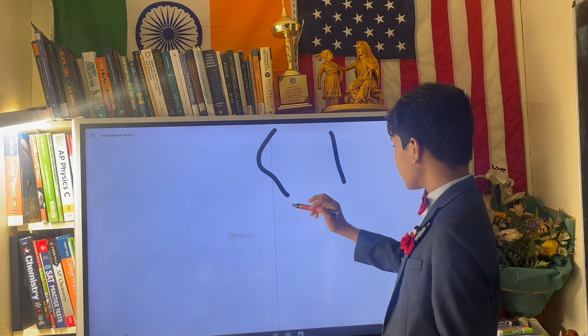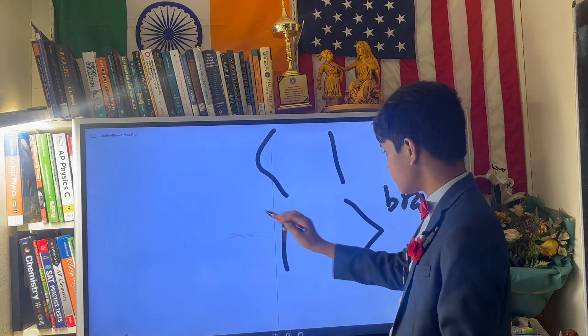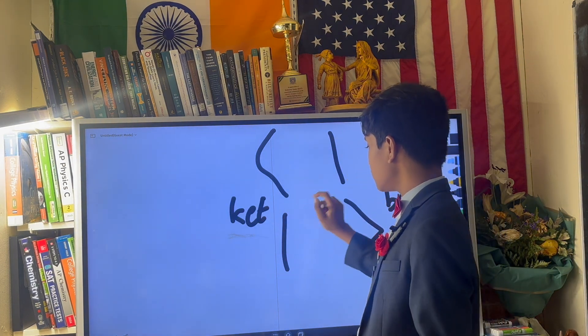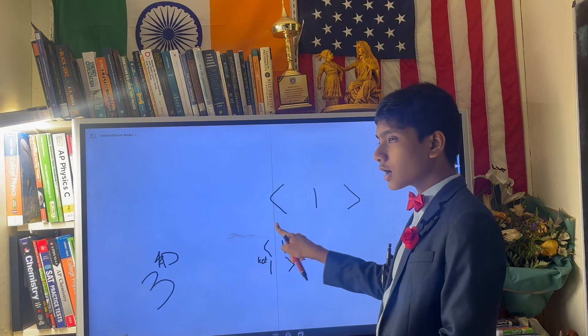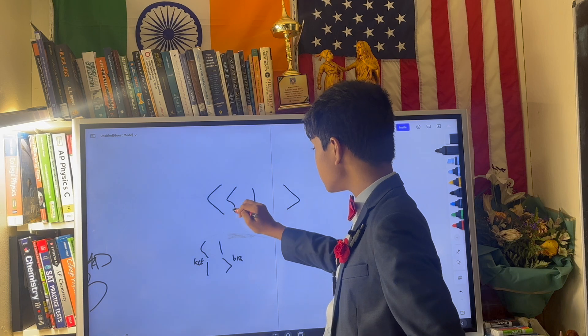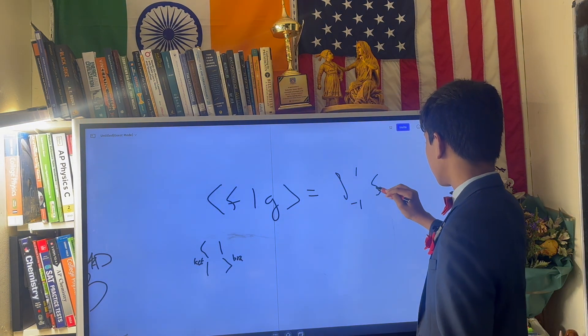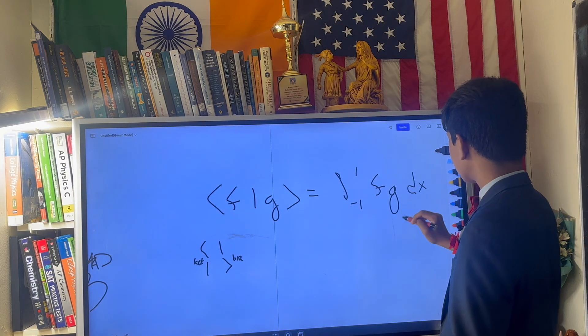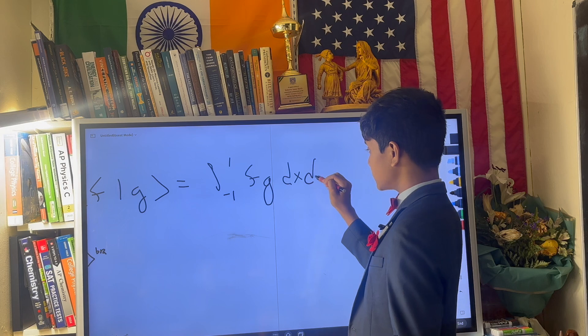We now use these funky things to denote vectors, the bra and the ket. We've defined an inner product between two functions, not just vectors, which is just their integral over a certain interval. And this generalizes to multiple dimensions, of course.